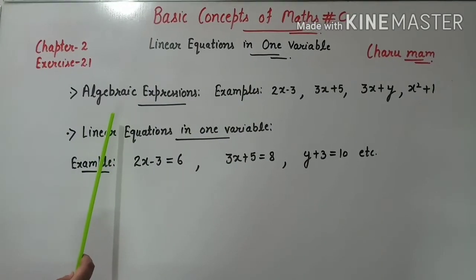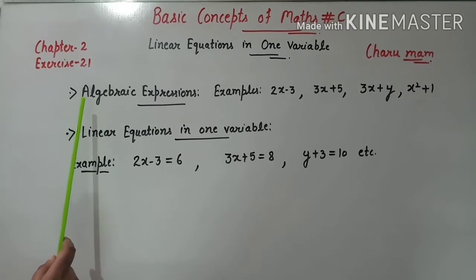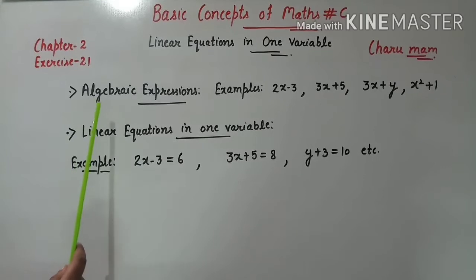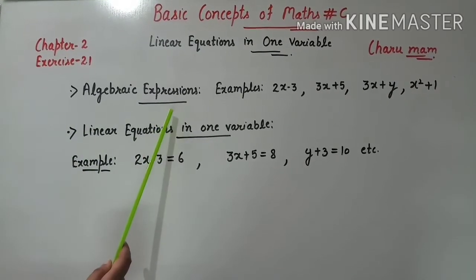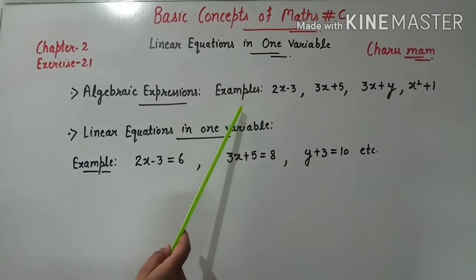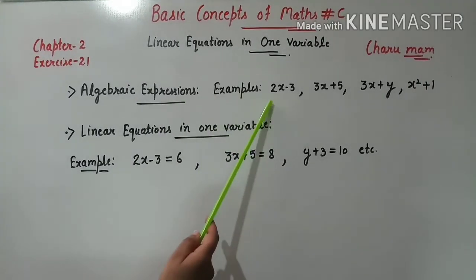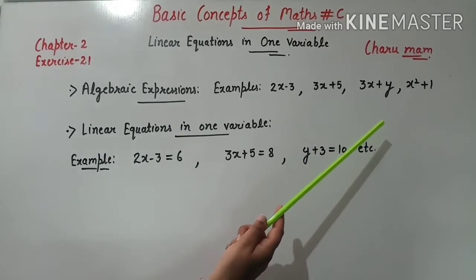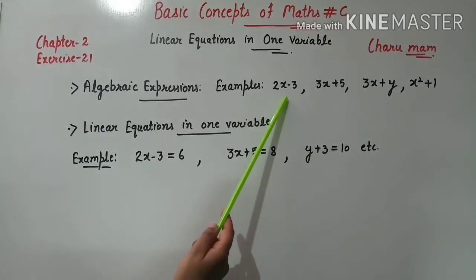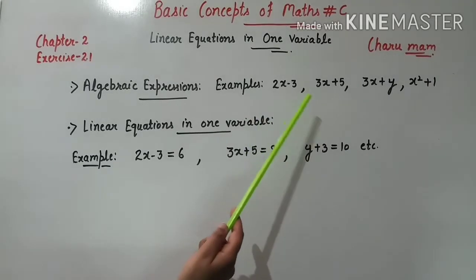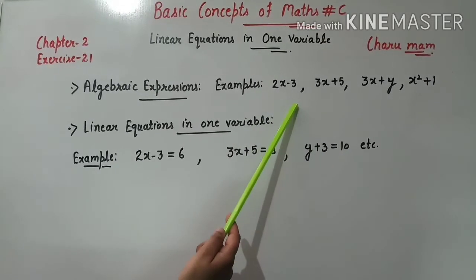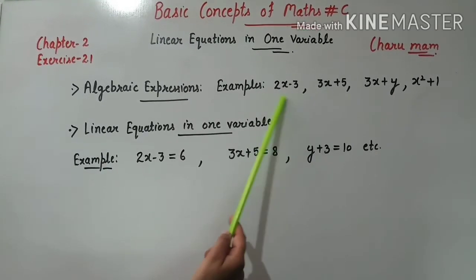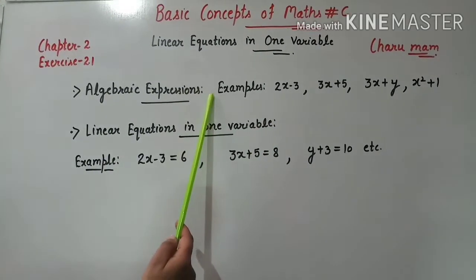Before starting questions of exercise 2.1, we will discuss some basic concepts — algebraic expressions. So algebraic expression क्या है? हम इसके examples discuss करेंगे. जैसे 2x-3, 3x-5, 3x-y, x²-1. यहाँ पर x, y यह variable हैं; 2, 3, 5 यह constant हैं. तो variable और constant को combine किया है और यह बने algebraic expression.